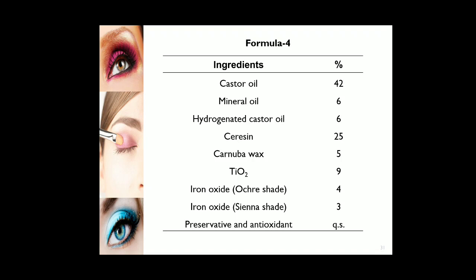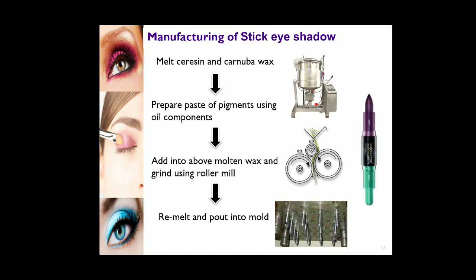The formula for stick eye shadow includes castor oil, mineral oil, hydrogenated castor oil, kerosene, carnauba wax, titanium dioxide, and different types of pigments. To manufacture: melt kerosene and carnauba wax together; prepare a paste of pigments using the oily components separately; add both mixtures together using a roller mill to form a homogeneous mixture; then re-melt and pour into molds to obtain the stick eye shadow.